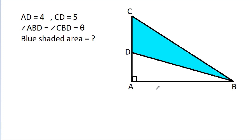In this video, we have been given a right angle triangle in which AD is 4, CD is 5, and angle ABD is equal to angle CBD, that is theta. Then we have to find the blue shaded area.